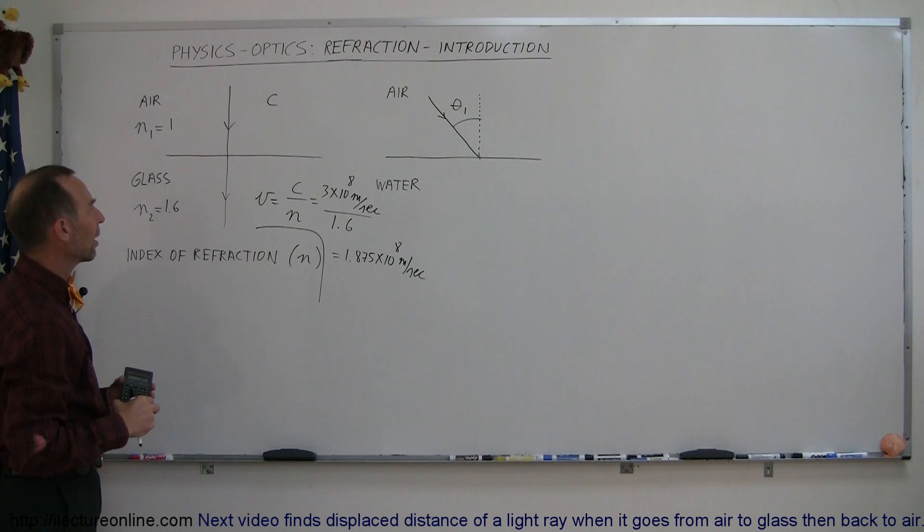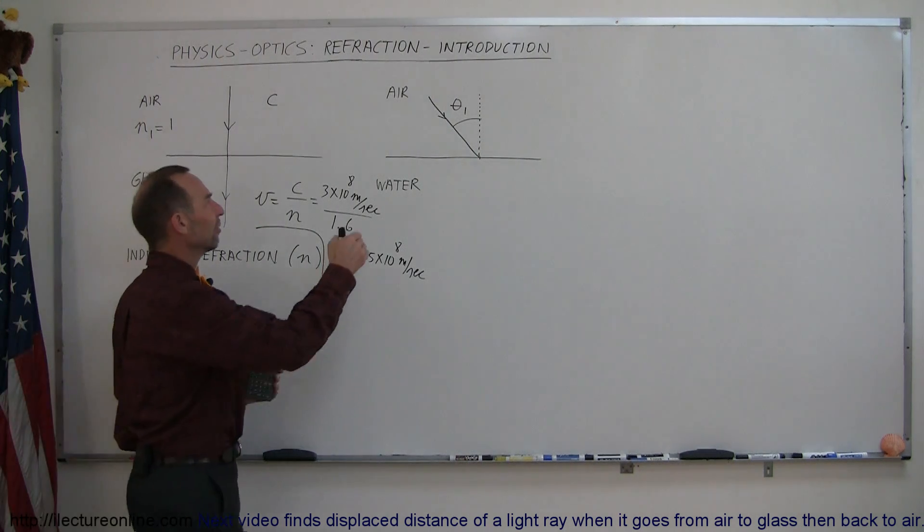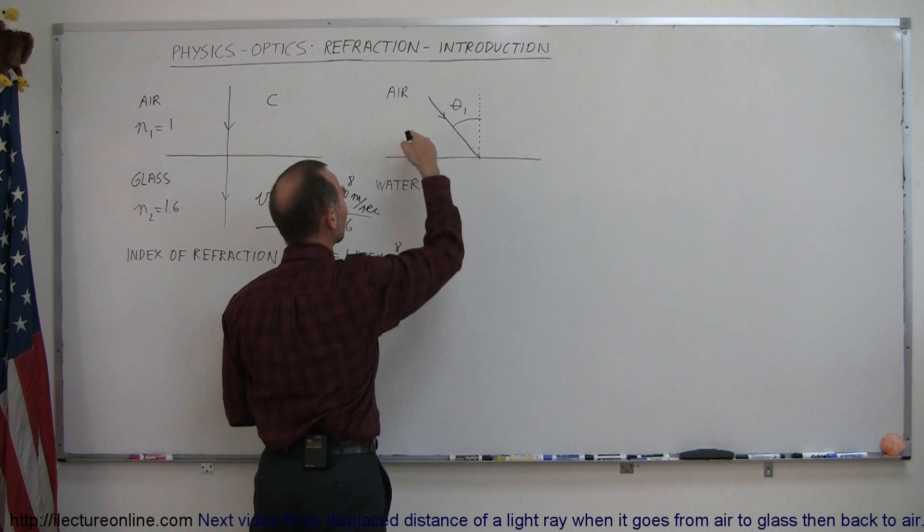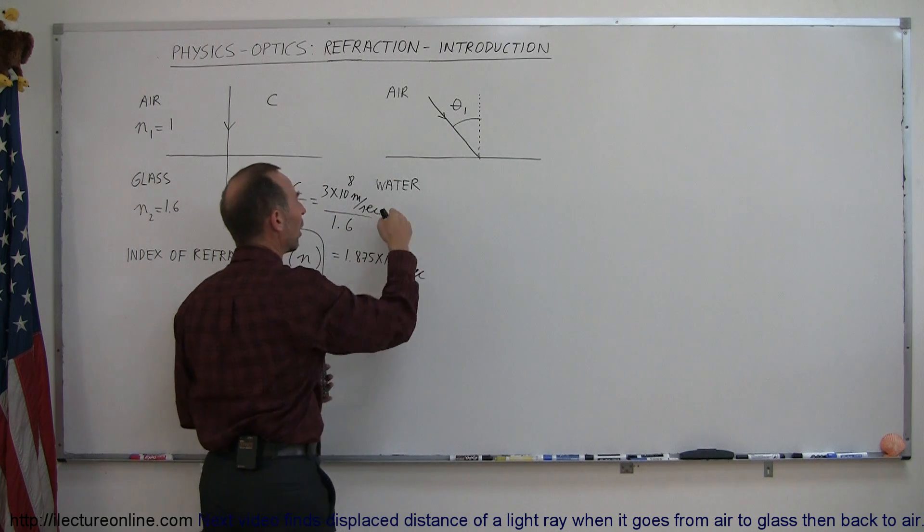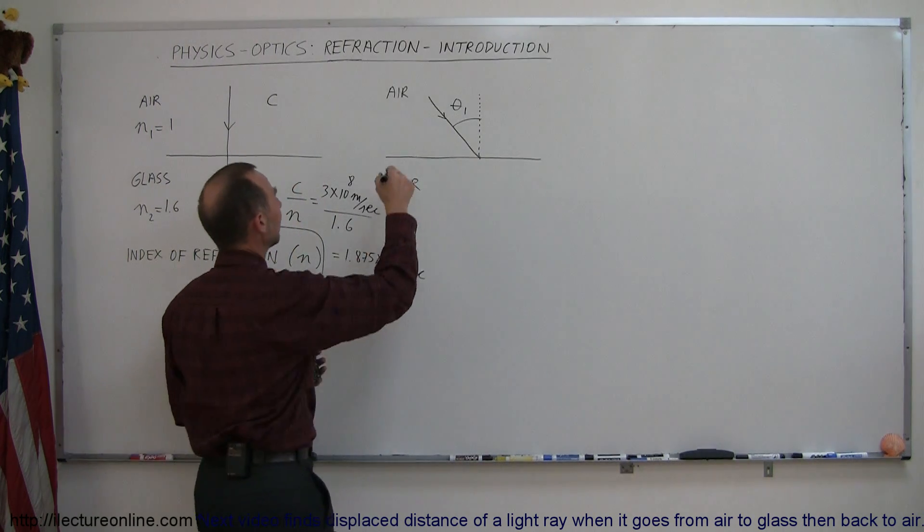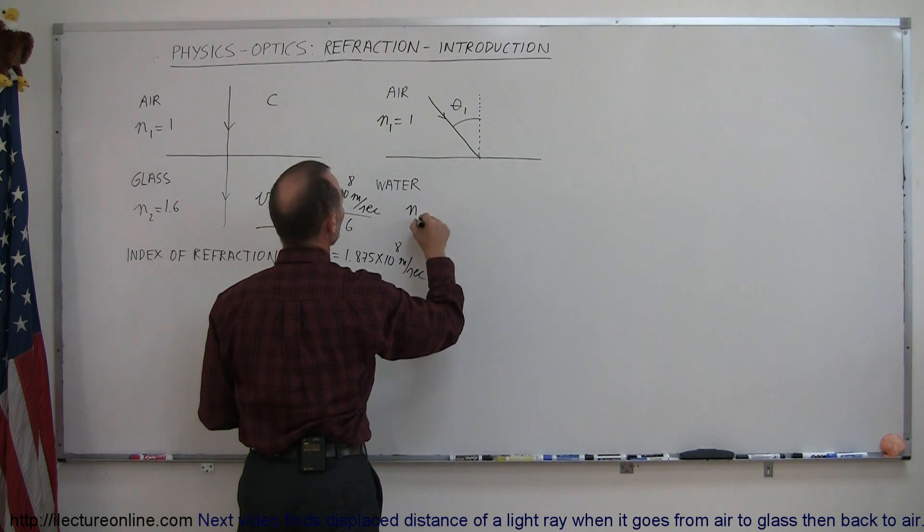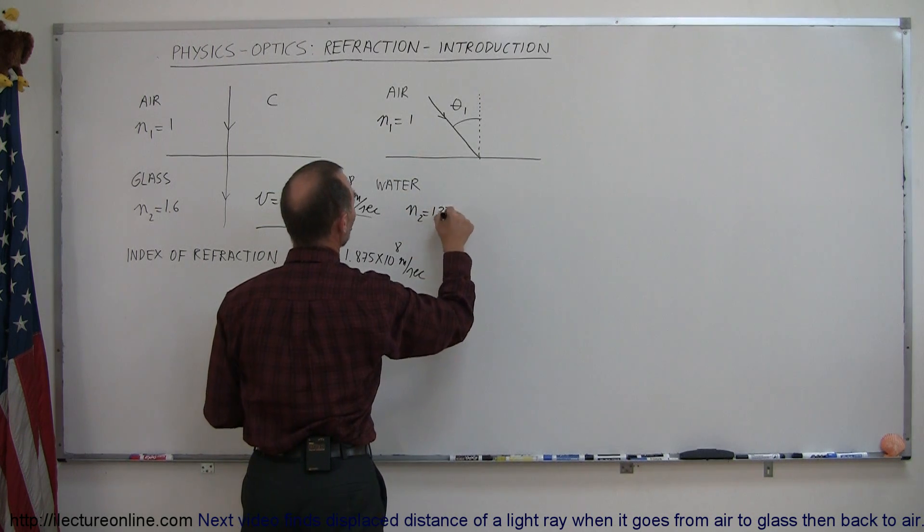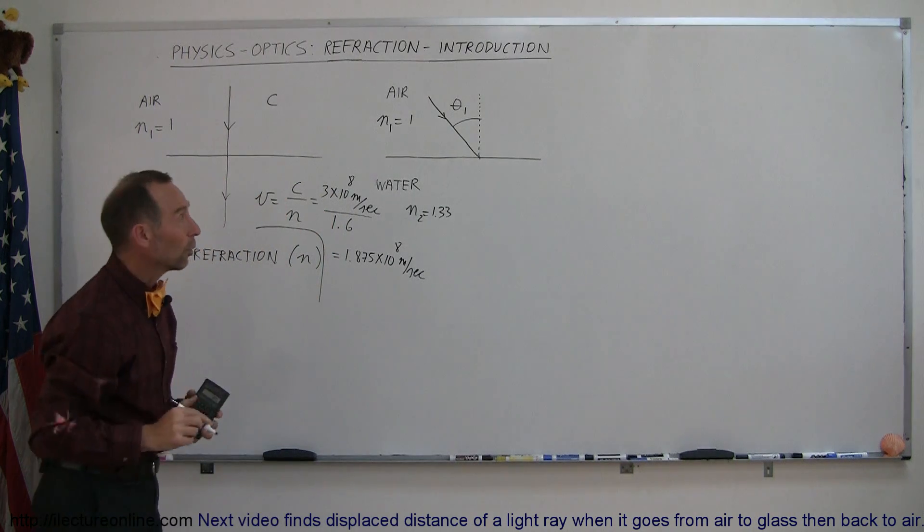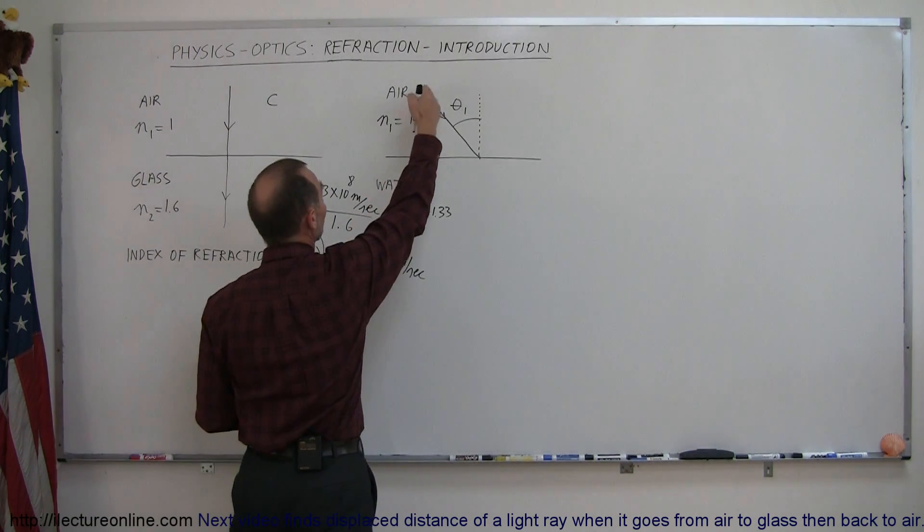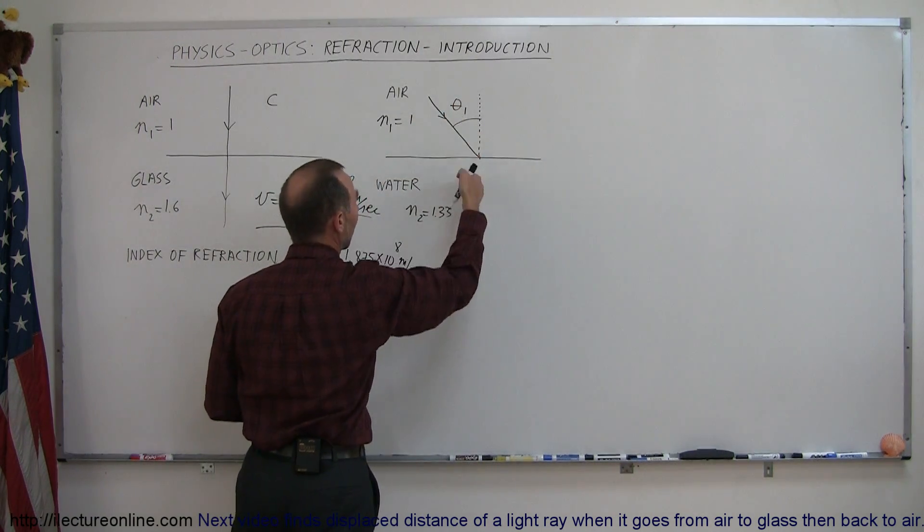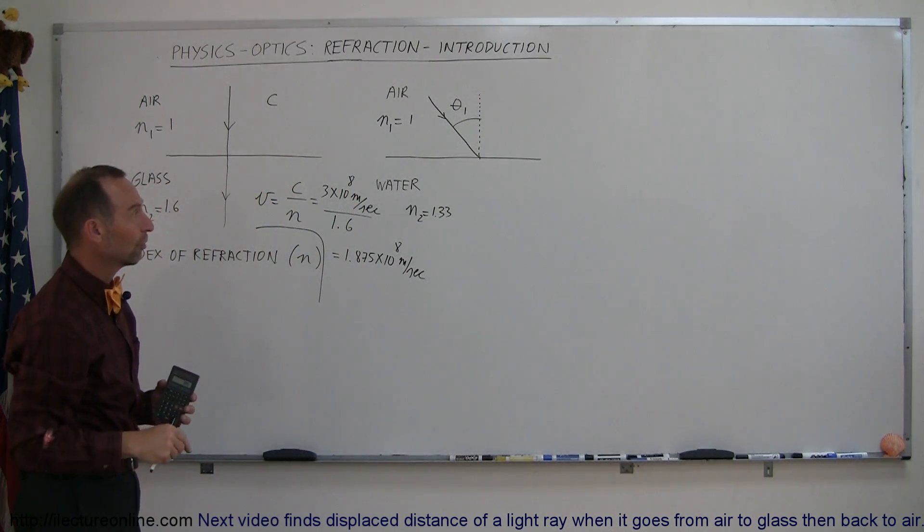So what happens now when a ray of light travels from one medium to another? Here we have air and water. The index of refraction for air, n1 equals 1, and for water, n2 equals 1.33. Now notice that the light does not travel straight across the boundary at a line that's perpendicular normal to the surface.